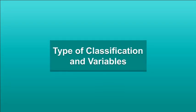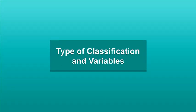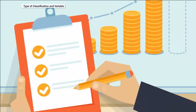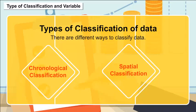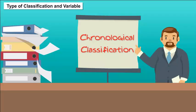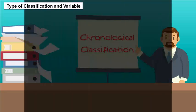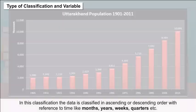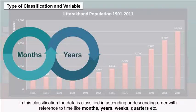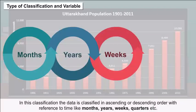Types of classification and variables: There are different ways to classify data. Chronological classification — in this classification, the data is classified in ascending or descending order with reference to time, like months, years, weeks, quarters, etc.